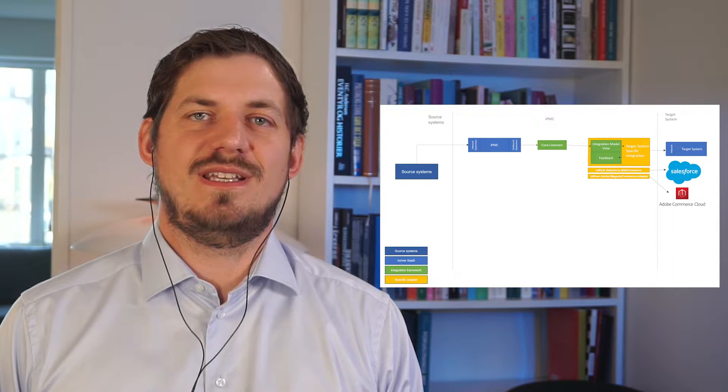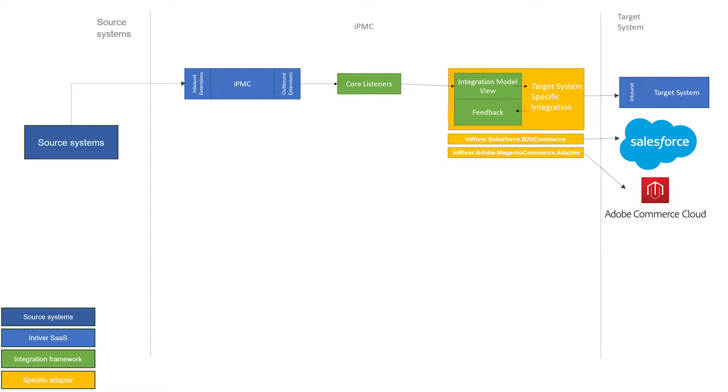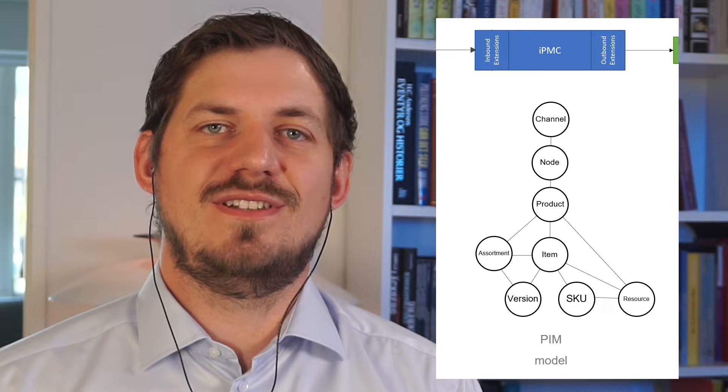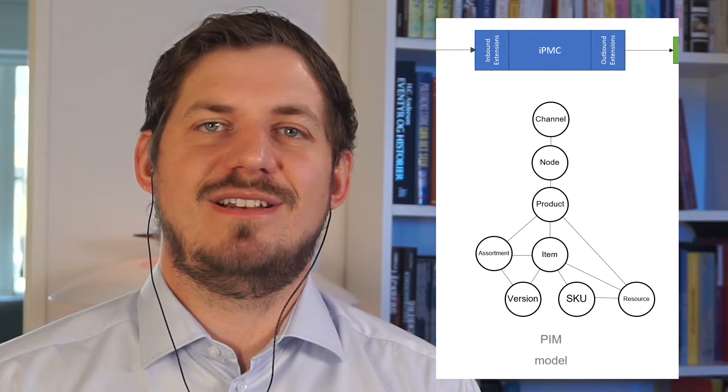The target system could be Salesforce Commerce or Adobe Magento Commerce. In InRiver we have the PIMP model with all of the different entity types and relations. The PIMP model is typically specific to the products of the company using the PIMP and this data model varies a lot, but it could be sourced in the following way.